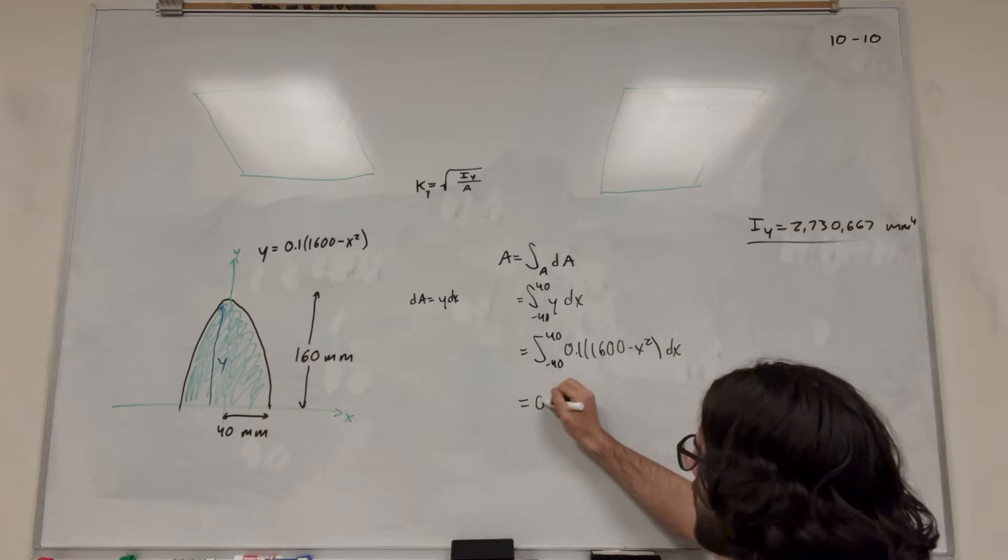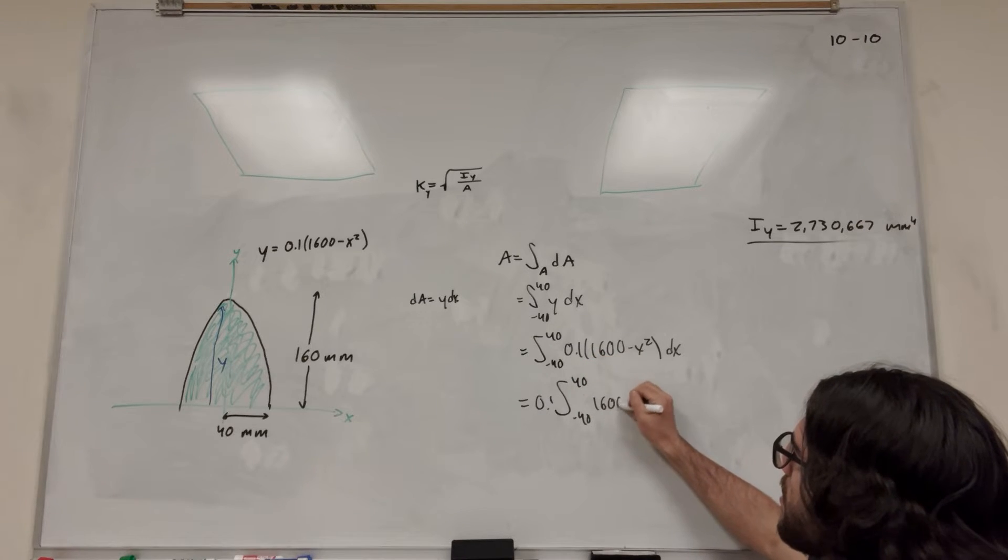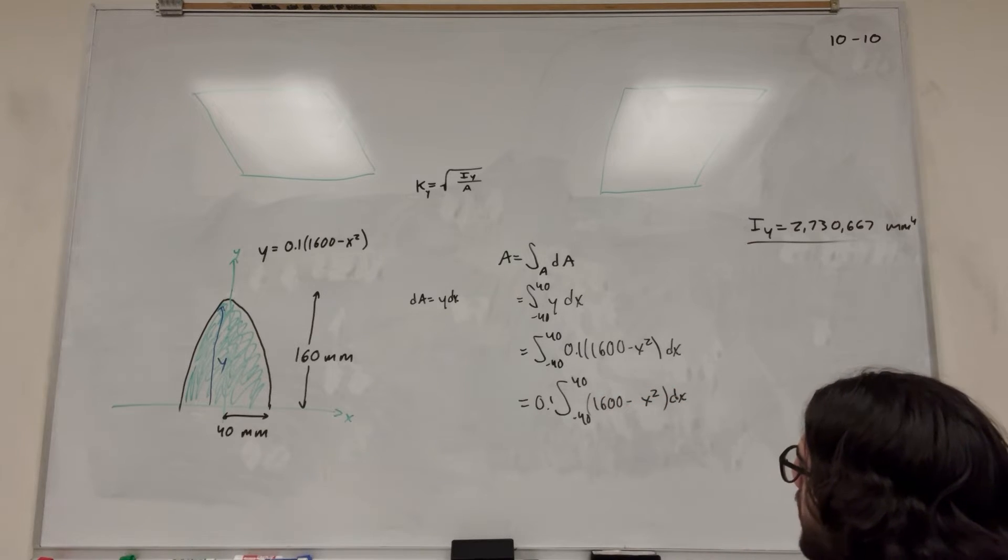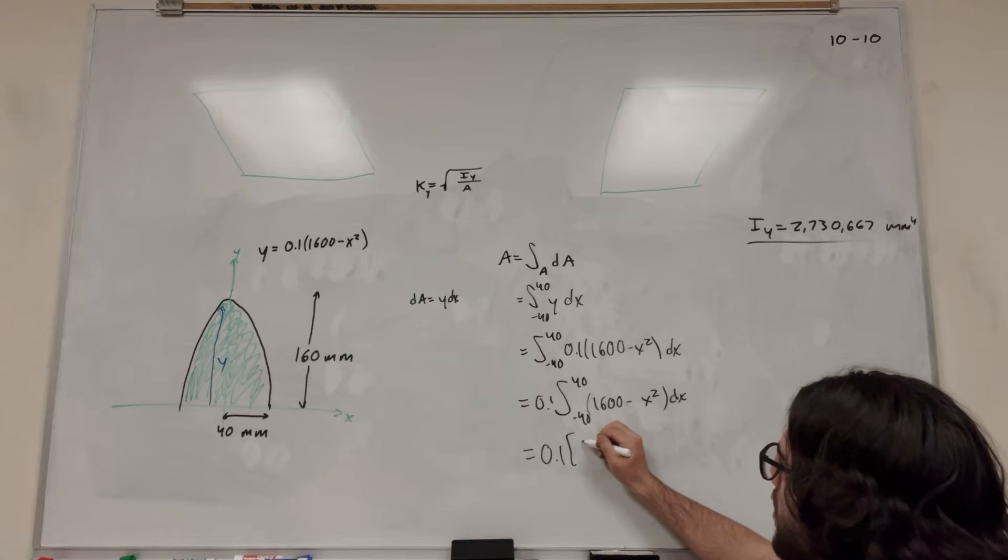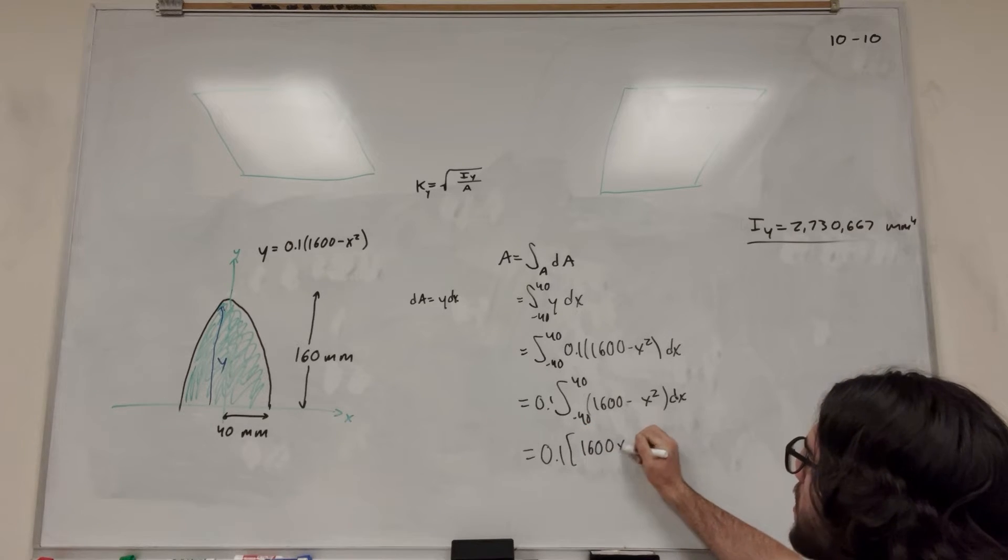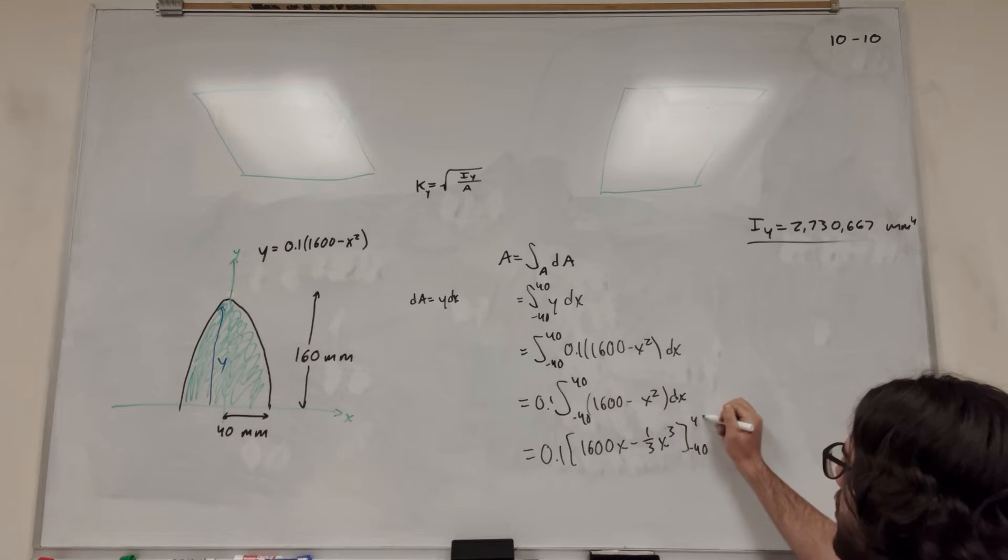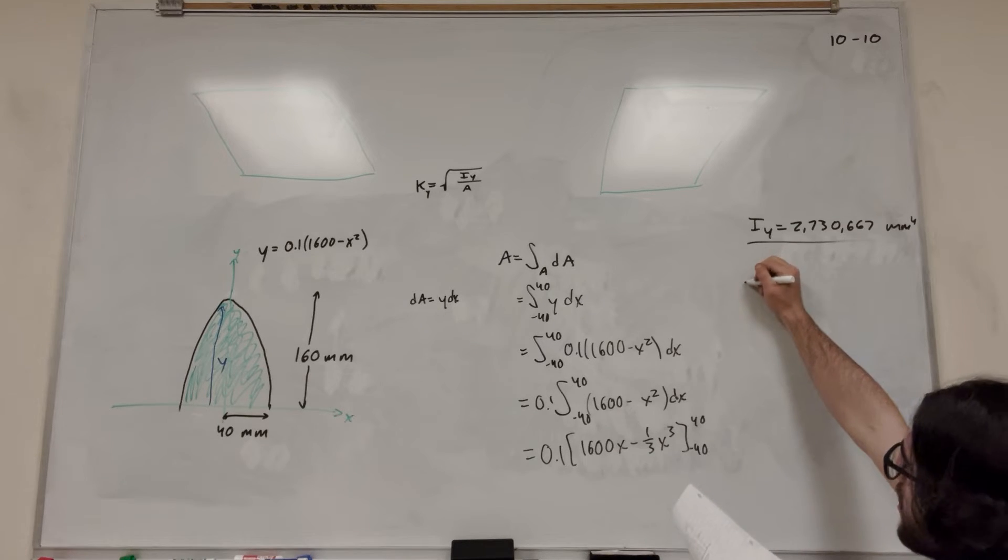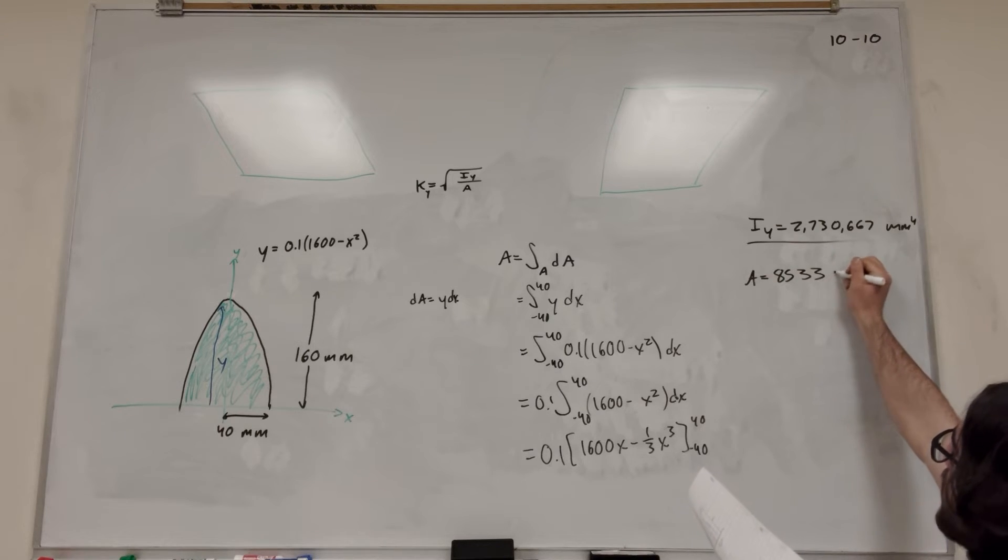So bring out that 0.1. Negative 40 to 40. 1,600 minus x squared dx. So let's do the integral. So this is equal to 0.1. So it's going to be 1,600x minus 1 third x to the third from negative 40 to 40. So then again, you're just going to plug in those. You're going to get your number. So this is going to be area. It's equal to 8,533 millimeters squared.